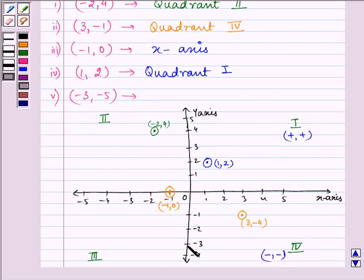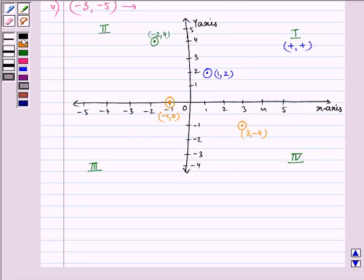Sorry, that will be in the third quadrant as -3 and then -5. Let us draw -5 also.